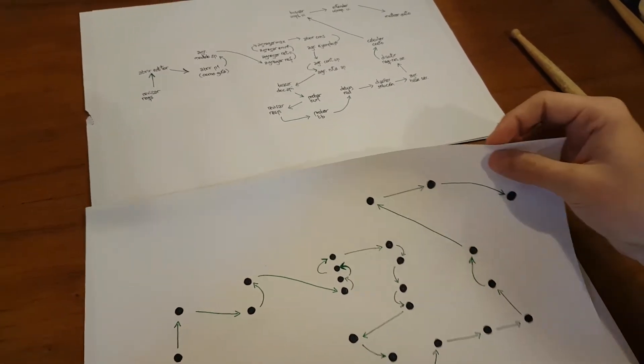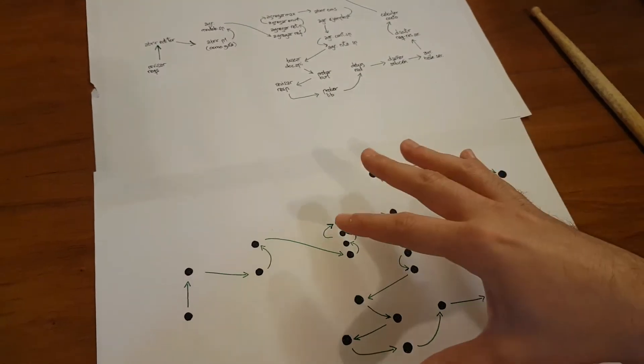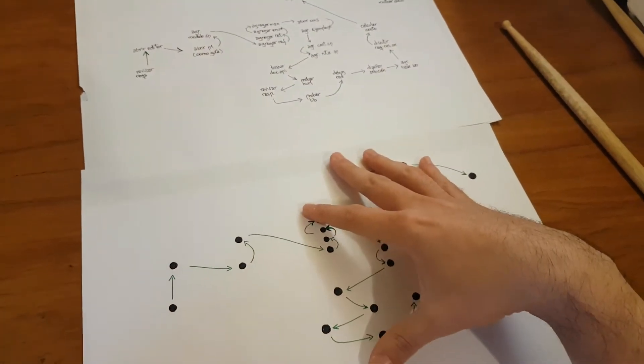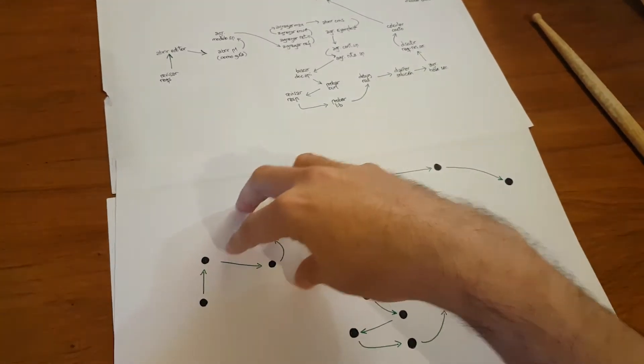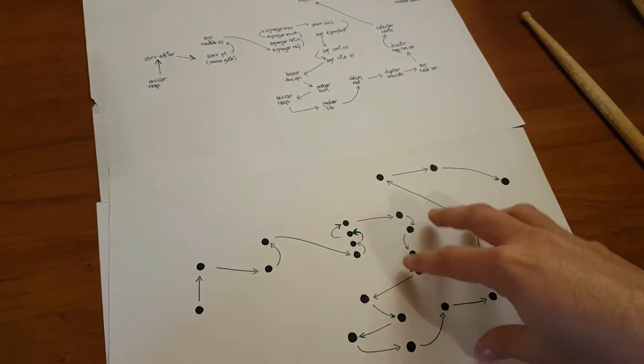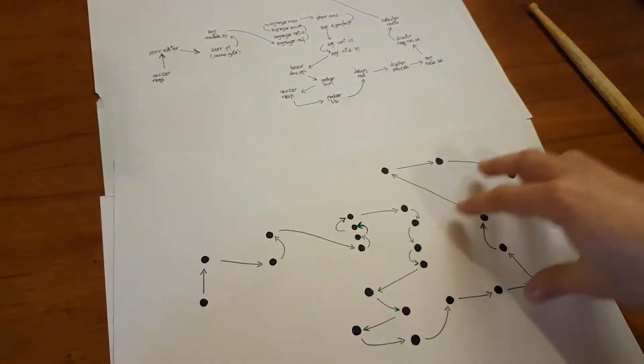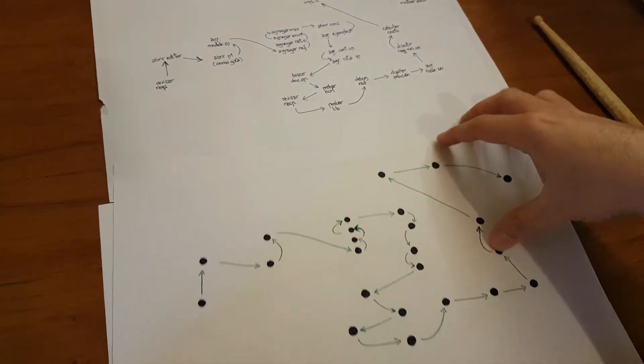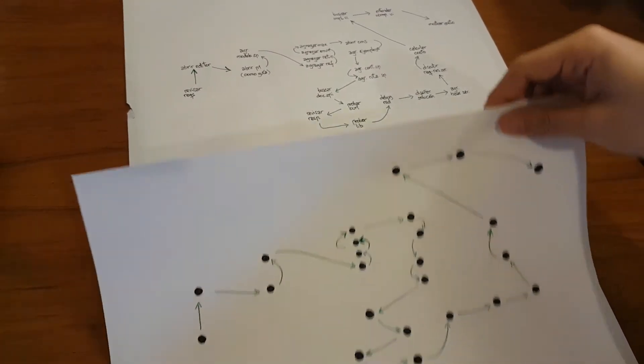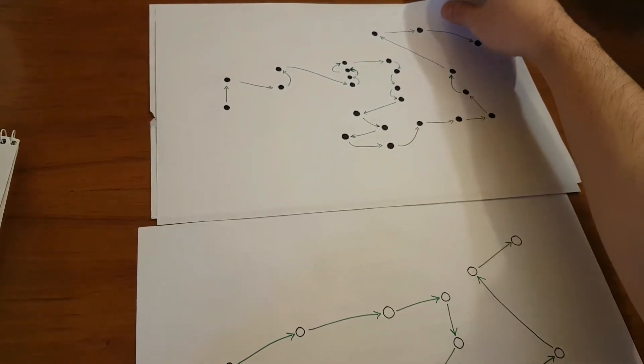Because in the end, the whole point of studying category theory is to learn how to talk in that language of mathematical properties in order to specify stuff that we know how we can then compose with other stuff, because we know what laws are being satisfied and all of that.